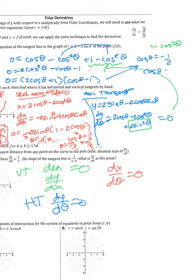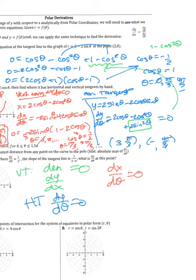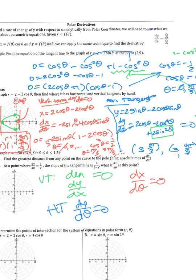Multiply through by −1 and combine: 2cos²θ − cosθ − 1 = 0. Factor: (2cosθ + 1)(cosθ − 1) = 0. This gives cosθ = −1/2 (so θ = 2π/3 and 4π/3) and cosθ = 1 (θ = 0, which is the cusp — excluded). At θ = 2π/3 and θ = 4π/3, plug into r = 2 − 2cosθ: r = 3 for both. The graph confirms horizontal tangents at those two points.